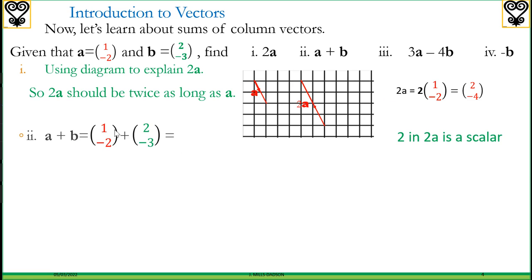If you want a plus b, it's a matter of summing the components: 1 plus 2 and negative 2 plus negative 3, and that gives us (3, -5).